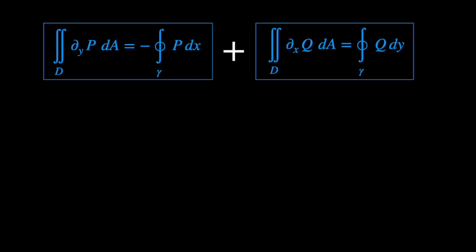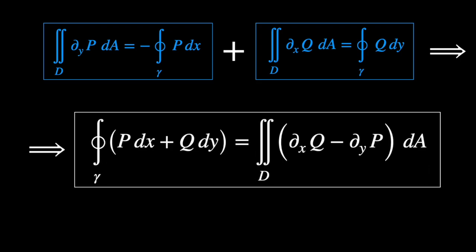Now we put these two results together and sum them. Adding these two equations, we get the equation right here — which is what we were trying to prove, also known as Green's theorem.